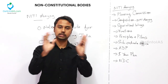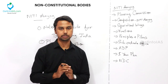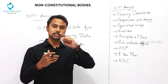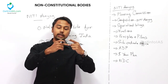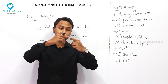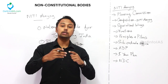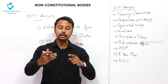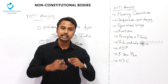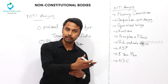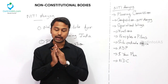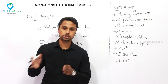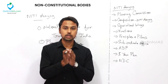What are the other functions of the Planning Commission? First, it will formulate a plan. Second, it will analyze what are the problems and hindrances to the economic development of India. Third is the implementation of the plan. So the three main functions are: formulate a plan, analyze problems, and implement the plan.